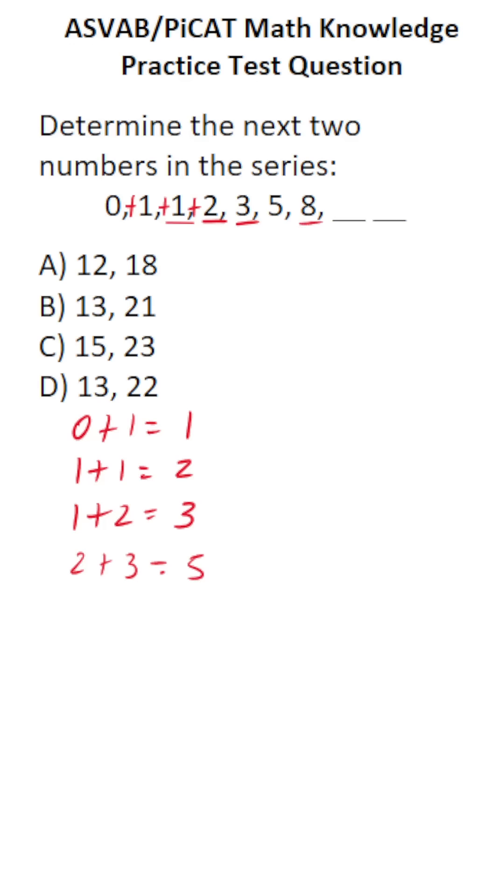To get to 8, we add the two preceding numbers, notably 3 and 5. And so to get to this missing number, we're going to add the two preceding numbers, those are 5 and 8. 5 plus 8 is 13, so this is 13.